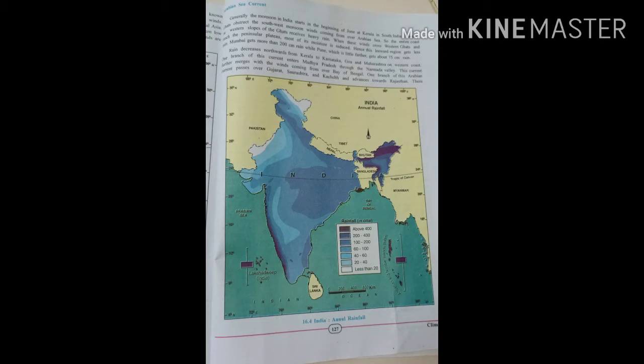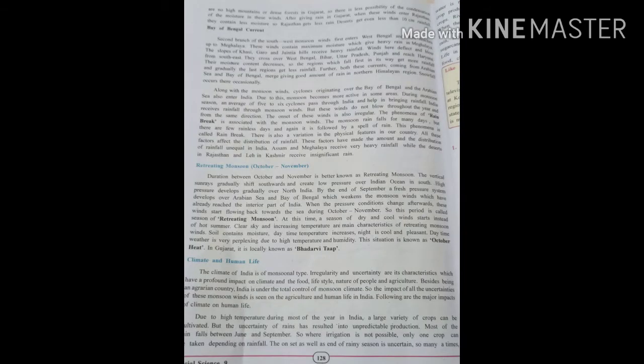There is less possibility of condensation of moisture in these winds. After giving rain in Gujarat, when these winds enter Rajasthan they contain less moisture, so Rajasthan gets very less rainfall.